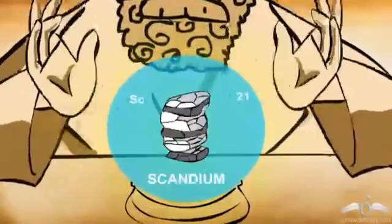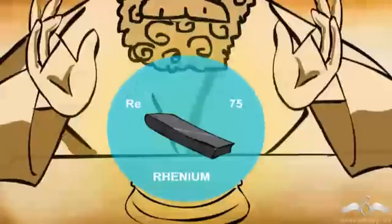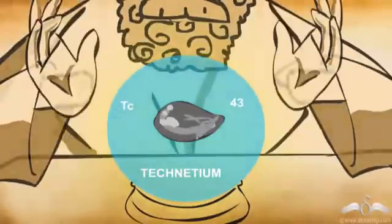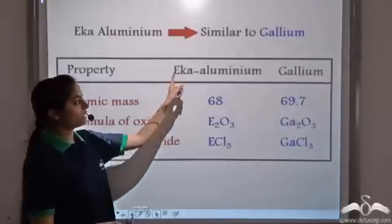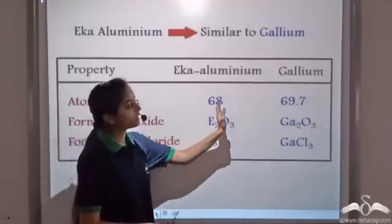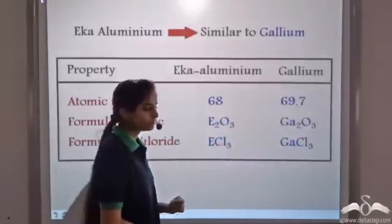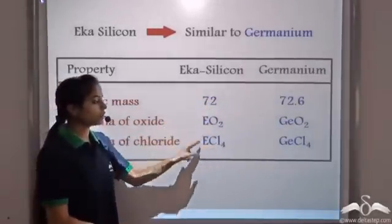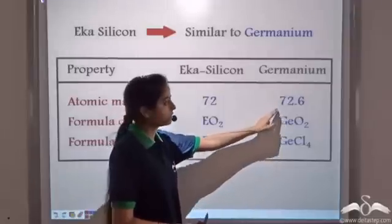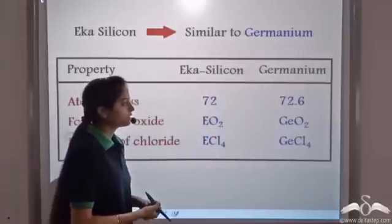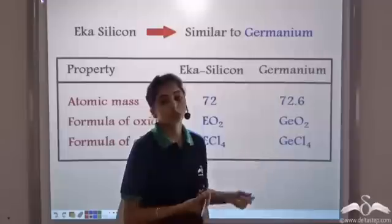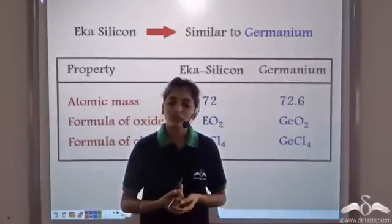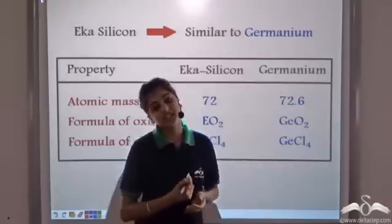He predicted some other elements as well, like scandium, germanium, rhenium, and technetium. Mendeleev had predicted the properties of Eka-aluminium, which matched gallium when it was discovered. He repeated the same for Eka-silicon, whose properties were similar to germanium when it was later discovered. These undiscovered elements' properties were accurately predicted by Mendeleev — a great achievement.